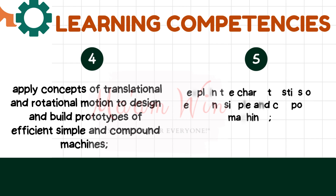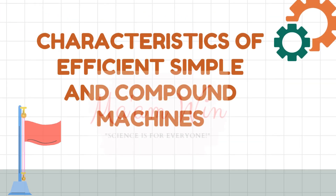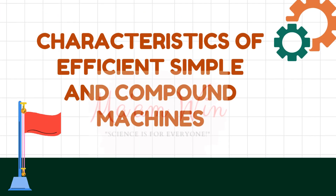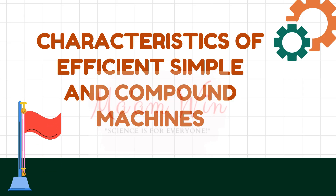Based on the depth and curriculum, these are the learning competencies that we are going to discuss today. We have learning competency number 4 and number 5. Learning competency number 4: Apply concepts of translational and rotational motion to design and build prototypes of efficient, simple, and compound machines. Number 5: Explain the characteristics of efficient, simple, and compound machines.